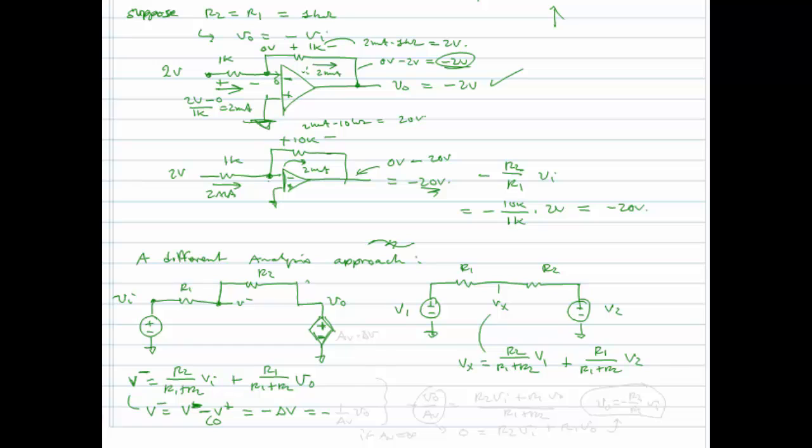We know that V out is equal to AV times delta V. So now let's, instead of writing VO in terms of delta V, let's write delta V in terms of VO, because after all we're trying to solve for VO. So we can write one over AV times VO. And all I need to do now is, once I have this superposition expression that I can write by inspection, I just replace V minus with an expression for VO.